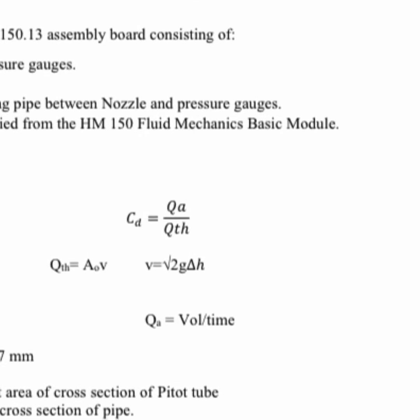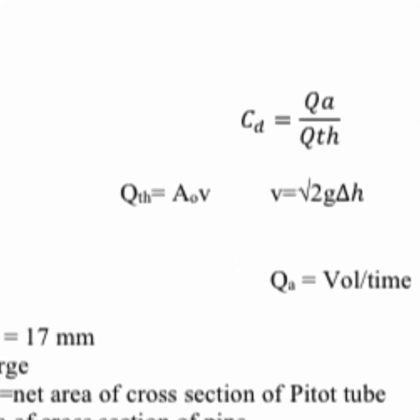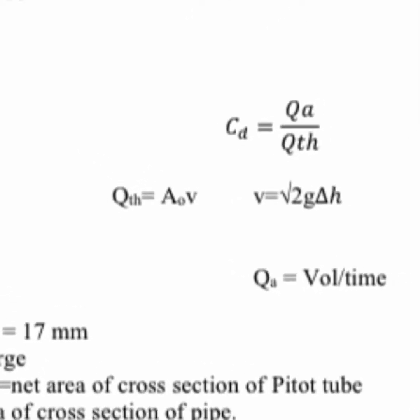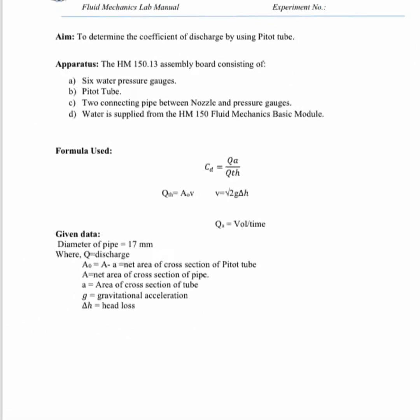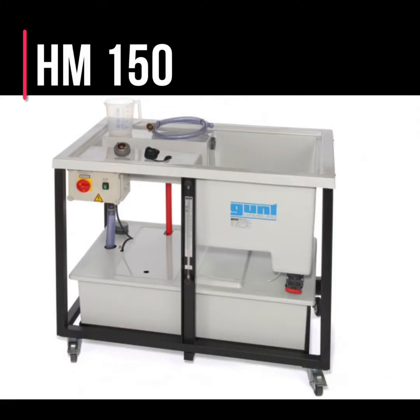CD equals actual discharge divided by theoretical discharge. The actual discharge is obtained from the rotometer, and the theoretical discharge is found using the formula: area multiplied by velocity. The velocity is calculated using the formula V equals the square root of 2g times delta x.